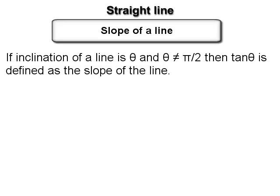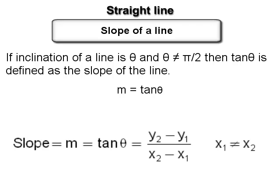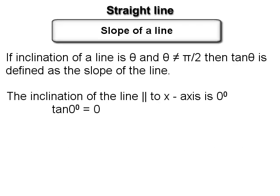The next important definition: if the inclination of a line is θ and θ ≠ π/2, then tan θ is defined as the slope of the line. Slope is usually denoted by m, so tan θ = m. Therefore, slope m = tan θ = (y₂ − y₁) / (x₂ − x₁). The inclination of the x-axis or a line parallel to the x-axis is 0°.